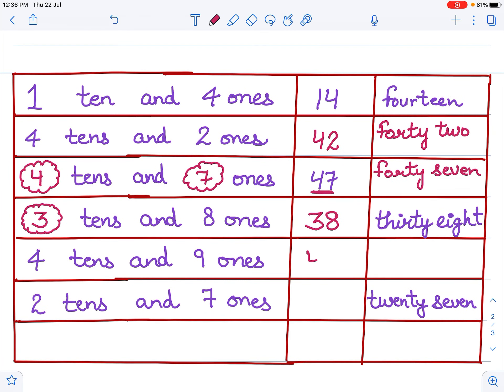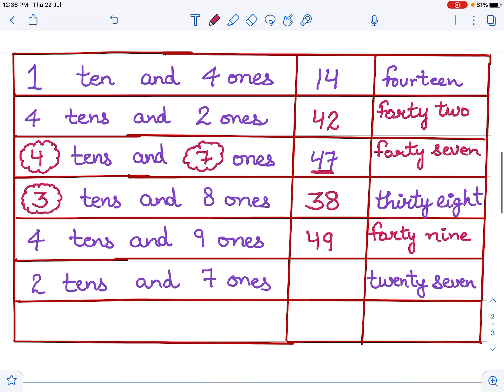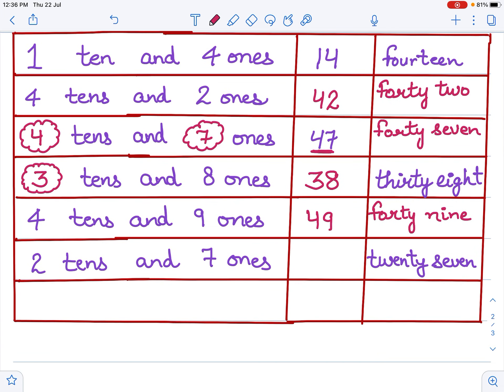Now next, four tens and nine ones, 49. 49. Now in words, 49: f-o-r-t-y n-i-n-e.